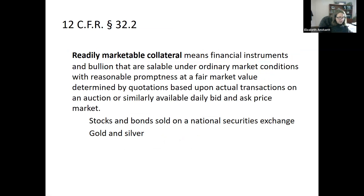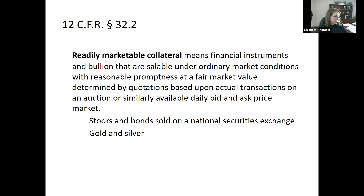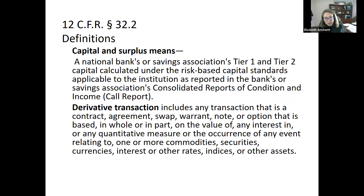Readily marketable collateral — which allows a bank to loan an additional 10% — means that the fair market value can be determined at any business day during business hours. This basically means something sold on a national exchange like the New York Stock Exchange, or gold and silver, which are also sold publicly. Determining that value is necessary to determine the value of collateral securing the additional loans. Banking law is a very definition-based area, and when we get to our module on capital, we'll discuss what makes up Tier 1 and Tier 2 capital — those best types of capital are the measure for how much can be loaned to one borrower.